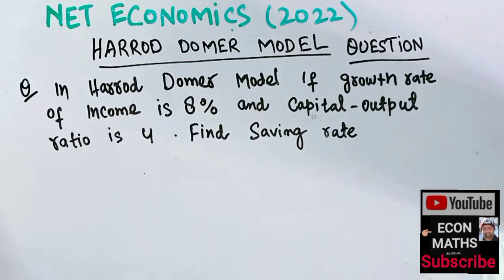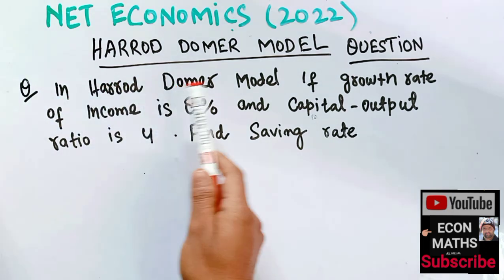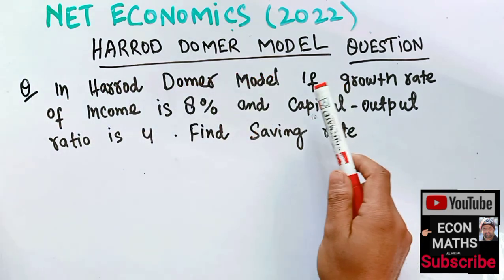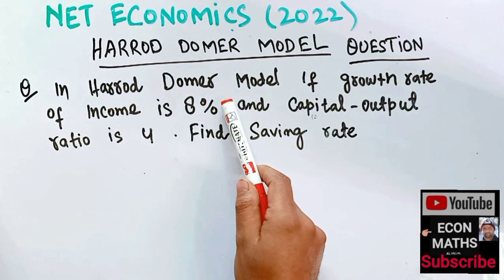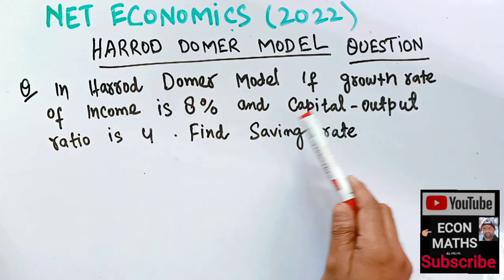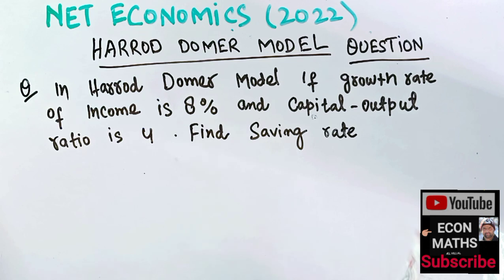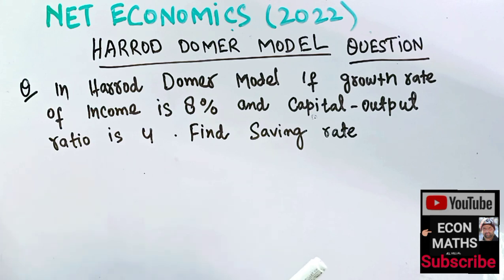Another question asked in the NET Economics paper of 2022 was on the Harrod-Domar model. The question was: if the growth rate of income (or output) is 8% and the capital-output ratio is 4, find the savings rate.